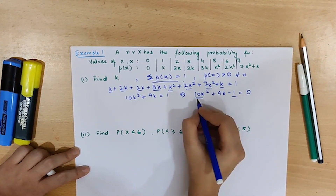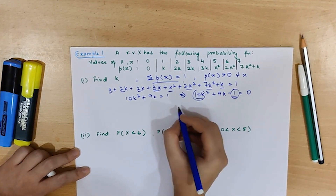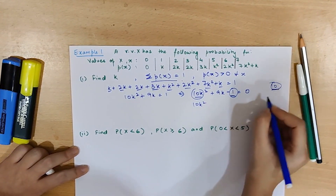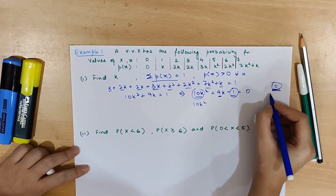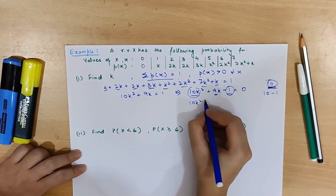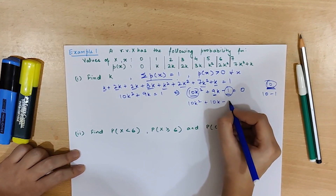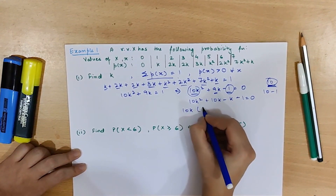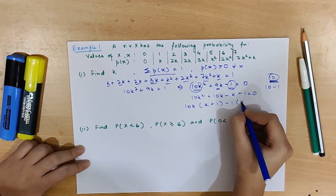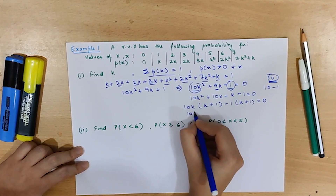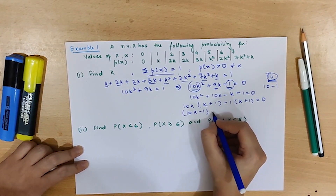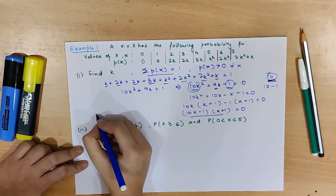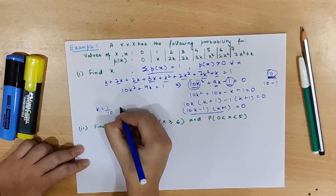Looking at this equation, we have a·c equal to 10. We need to find two numbers whose sum is 9 and product is 10, which would be 10 and −1. So we factor as 10k(k + 1) − 1(k + 1) = 0, giving us (10k − 1)(k + 1) = 0. This implies k = 1/10 or k = −1.